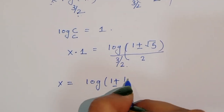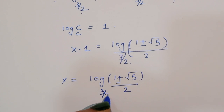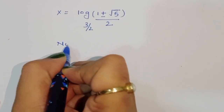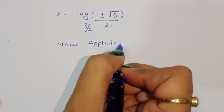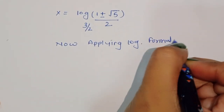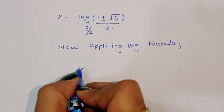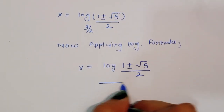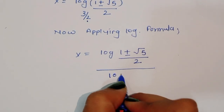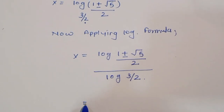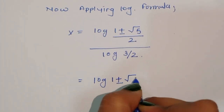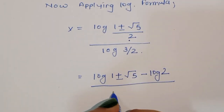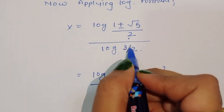Using the change of base formula, x equals log((1 + √5)/2) divided by log(3/2). Expanding log(3/2) as log 3 minus log 2, we get log((1+√5)/2) divided by (log 3 minus log 2).